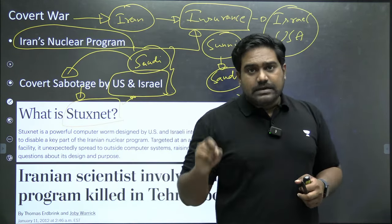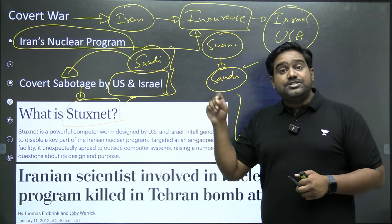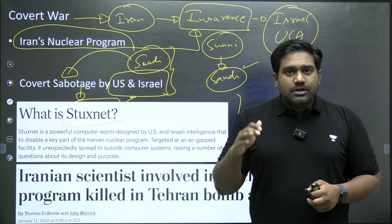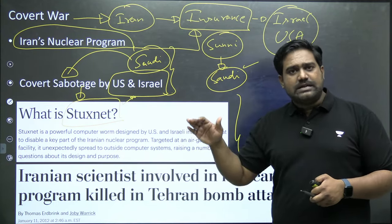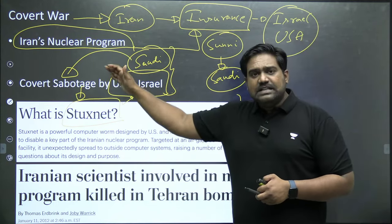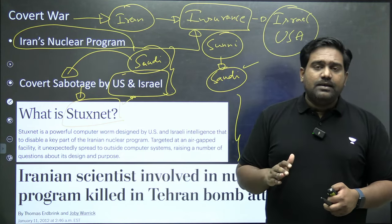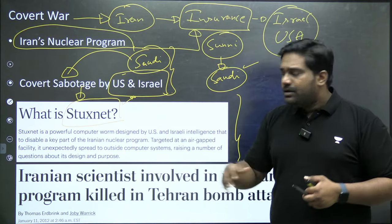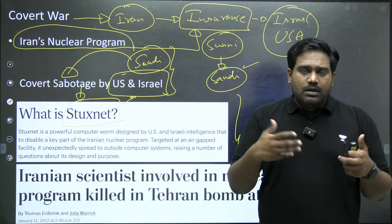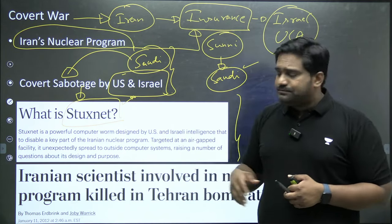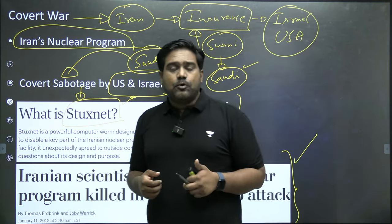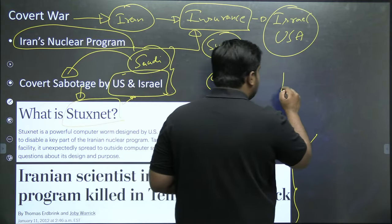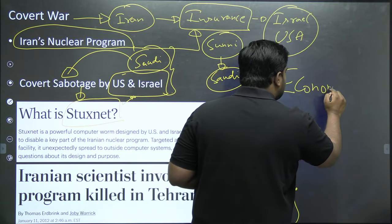Israel has also conducted several targeted strikes against Iranian nuclear facilities in the past. So Iran feels that the US and Israel are constantly targeting the country. Apart from these covert wars — where Iranian scientists have been assassinated and cyber weapons deployed to target Iran's nuclear program — the US in particular has targeted Iran with crippling economic sanctions.